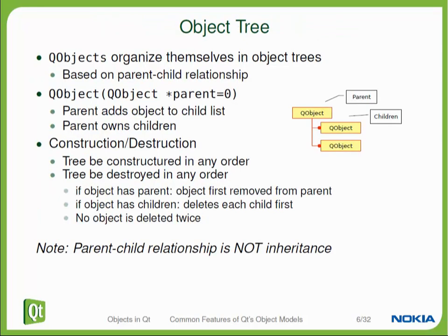The QObjects in your application form a tree. Every QObject can have a parent object, and if it has a parent, it's supposed to be owned by that parent. A QObject can also have a list of children, and these children are then supposed to be owned by this QObject itself. All the QObjects in your application form a tree of objects, which you can traverse, for example, to visit all the objects in your application.